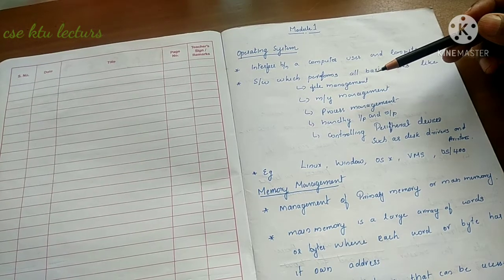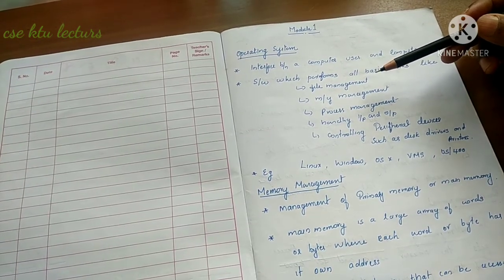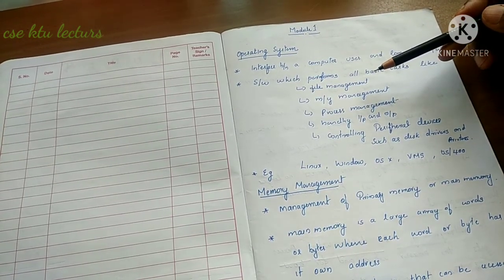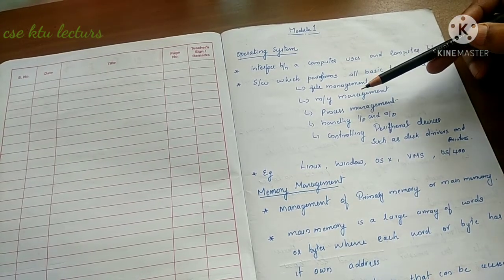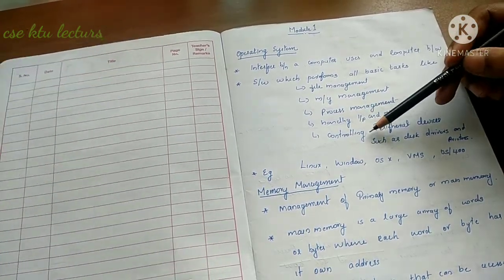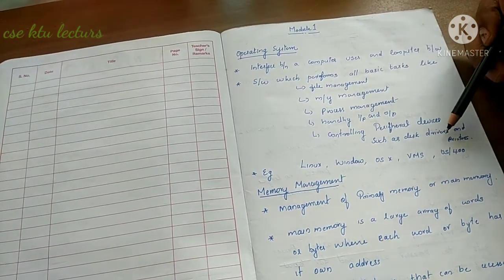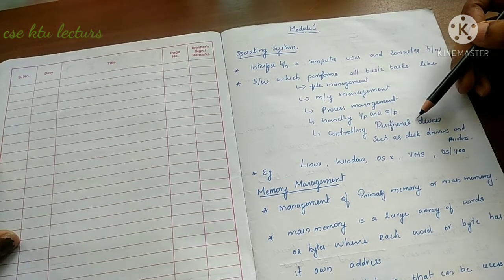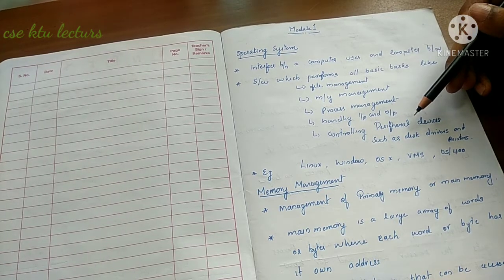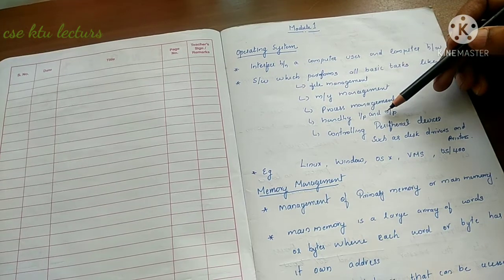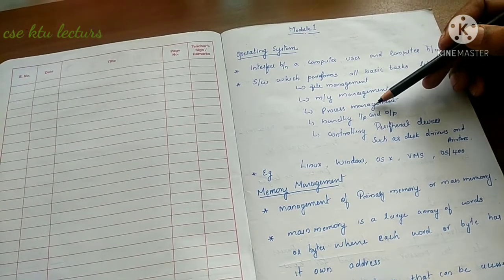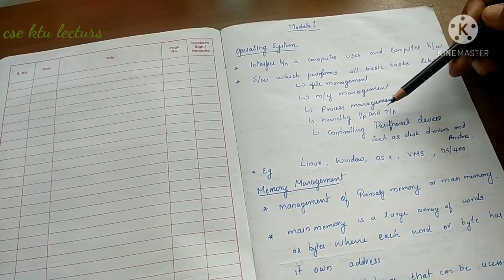What are the functions of an operating system? Mainly, the operating system software performs tasks including file management, memory management, process management, handling inputs and outputs, and controlling peripheral devices like disk drives and printers. For example, we use the printer through a peripheral device such as USB, and input/output devices like mouse and keyboard.